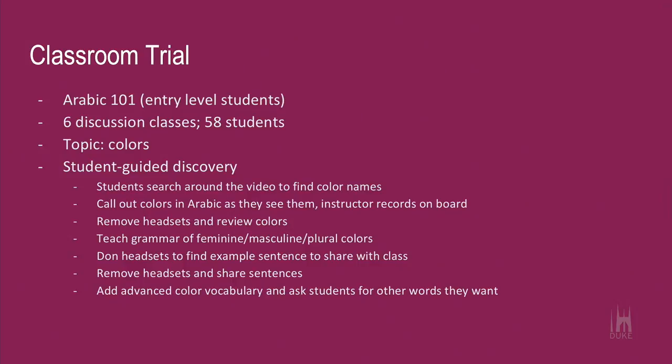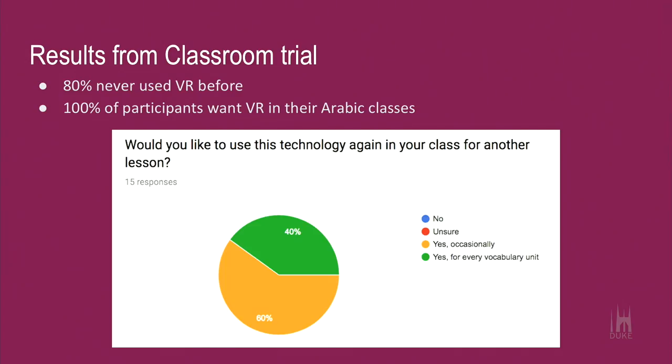We went to Arabic 101 discussion sections — six sections, 58 students — and taught a lesson about colors, with the Arabic and English words for each color. Students put on headsets, looked around, and tried to memorize as many colors as they could, then shared sentences using the new vocabulary. After the trial, we sent a survey. Even though 80% had never used VR before, 100% said they wanted to see it used regularly in class — 40% wanted it in every unit, and 60% throughout the semester.